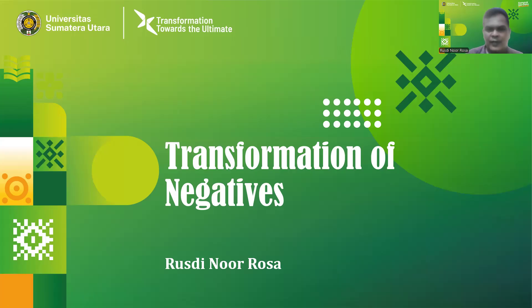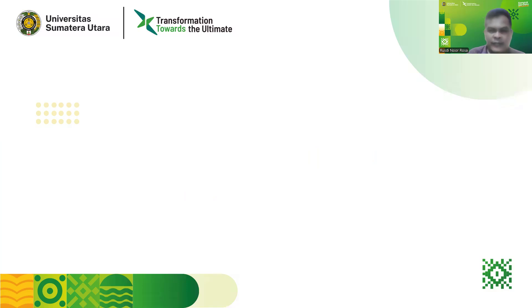Welcome back to my channel on linguistics and language learning. In this video I'm going to show you the transformational rule applied to negatives or to negative sentences. As you know, there are two ways to form a negative sentence in English: the first one is by using auxiliaries and the second one is without using auxiliaries. A negative sentence is indicated by the presence of the word 'not'. Now let's analyze both of them.